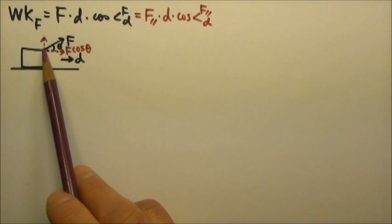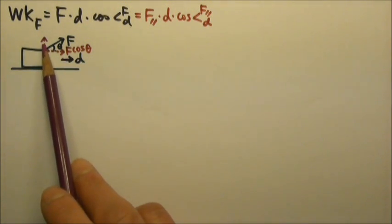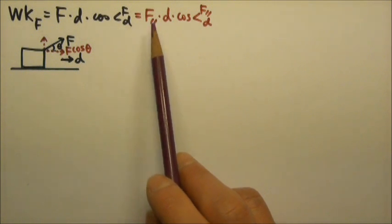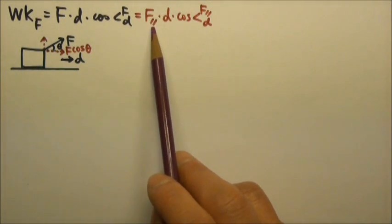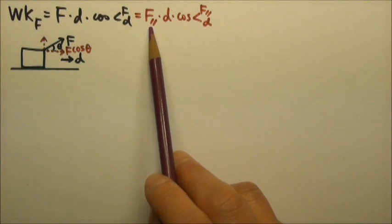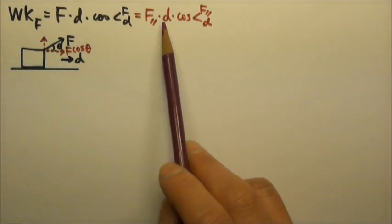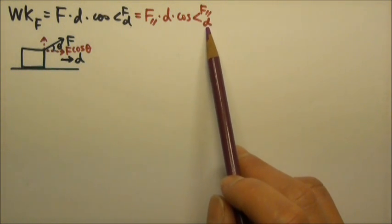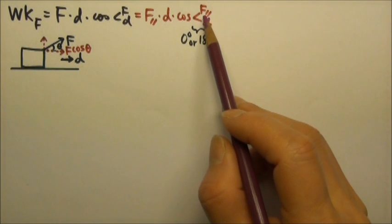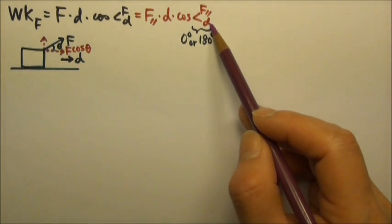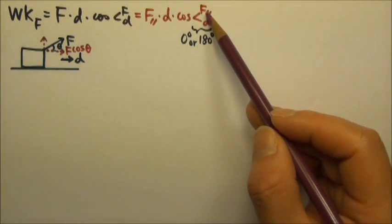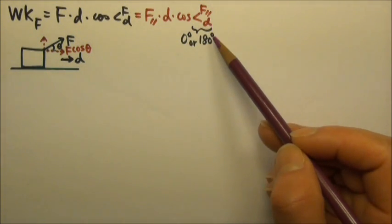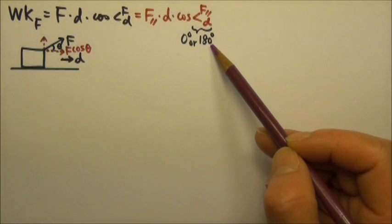The component of the force that is perpendicular to the displacement does not do work. Another way to find the work done is to find the parallel component of the force times the displacement times cosine of the angle between them. Because this component is already parallel to the displacement, the angle is either zero degrees — same direction — or 180 degrees — opposite directions.